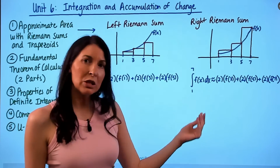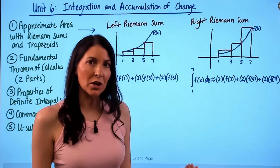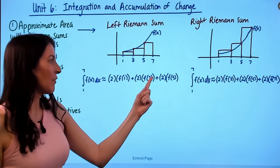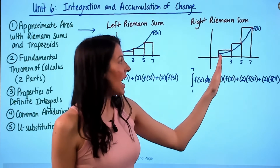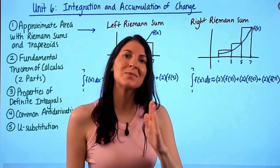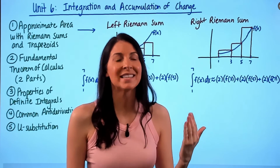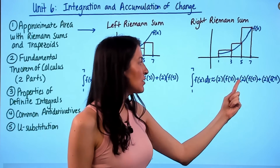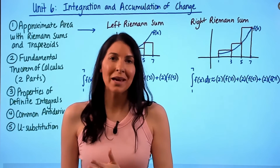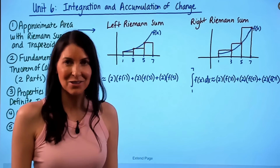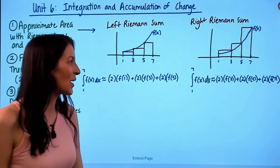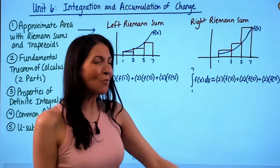For the right Riemann sum, you do something similar, except your function values shift: instead of f(1), f(3), f(5) you use f(3), f(5), and f(7), because we use the heights on the right ends. Again, since each rectangle has a base of two, you can factor out that two as a greatest common factor to simplify your work.